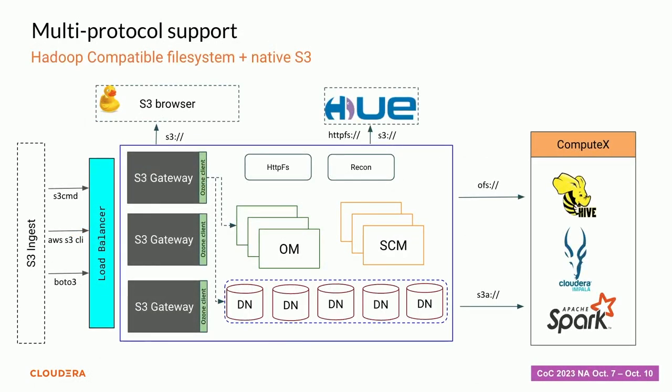From a data engineering perspective, on the left you have your favorite S3 ingest tool — you can use anything and talk to Ozone as if it's an S3 object store. On the right, you have compute experiences: you can leverage Ozone as a native file system using Hive, Spark, and Impala. You also have HTTPFS so you can use a Hue file browser to browse the file system similarly to HDFS, or use an S3 browser to look at Ozone — that is the power of Ozone.